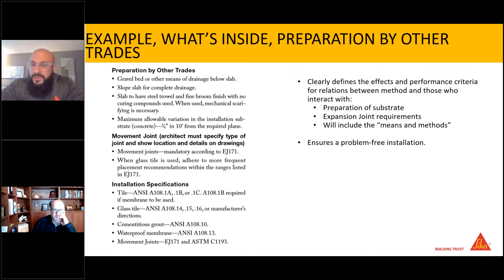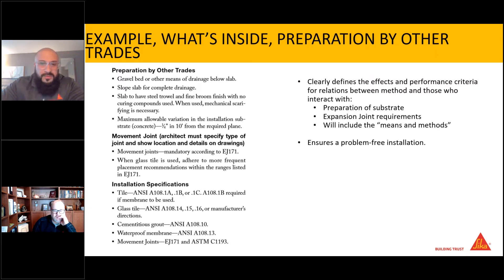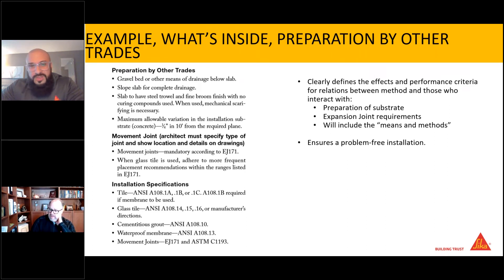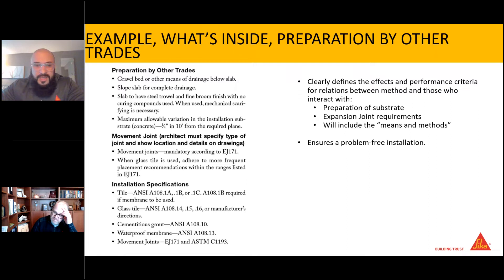Also very important in the book is preparation by other trades. Whether it's surface preparation — and I'm saying this sarcastically — everybody goes to a job site where the floor is perfectly flat. That never happens. So the handbook specifies maximum allowable variation depending on what size tile you're going to use. You can always reference that to have other trades come back and correct it. One of the most important sections is EJ171 movement joints — without movement joints, tile will buckle and pop with the expansion and contraction of the building. Your quarter-inch perimeter joint and joints within the tile assembly are critical for expansion and contraction, ensuring a long-lasting, problem-free installation.